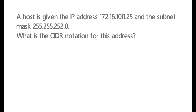Question four: a host is given the IP address 172.16.100.25 and the subnet mask 255.255.252.0. What is the CIDR notation for this address?